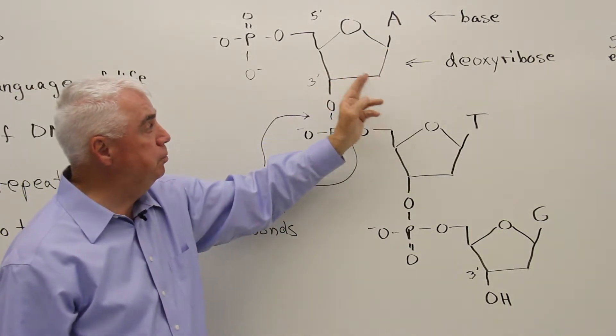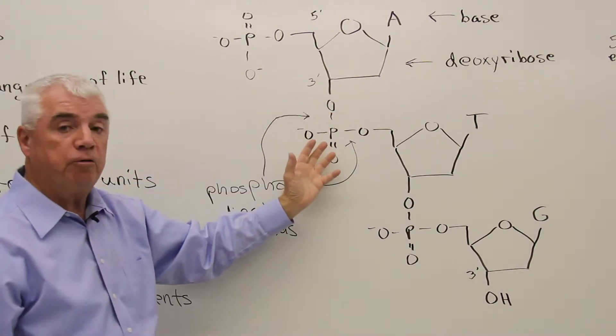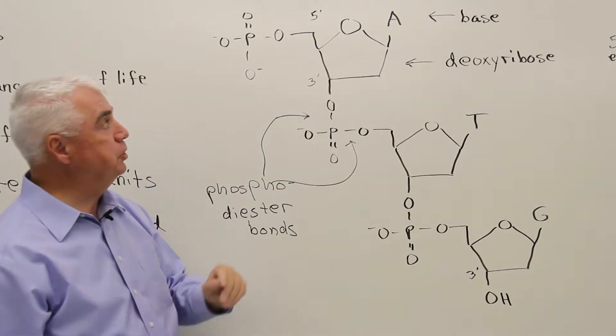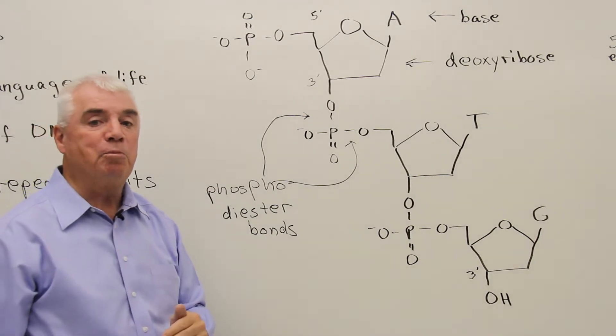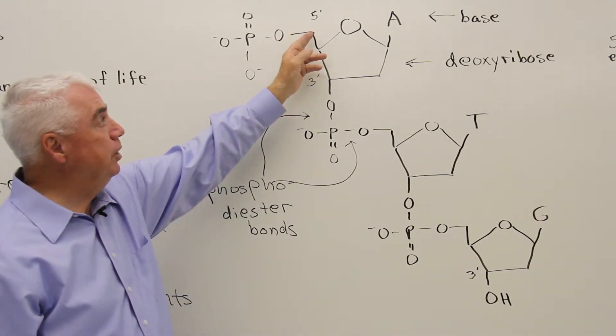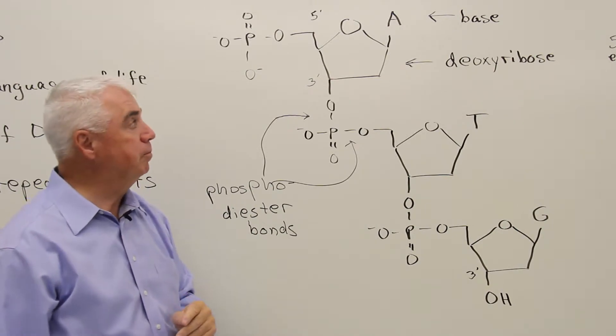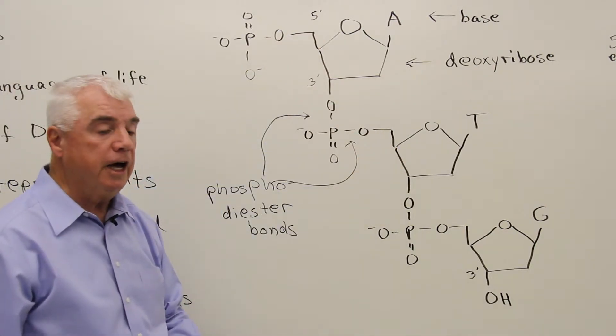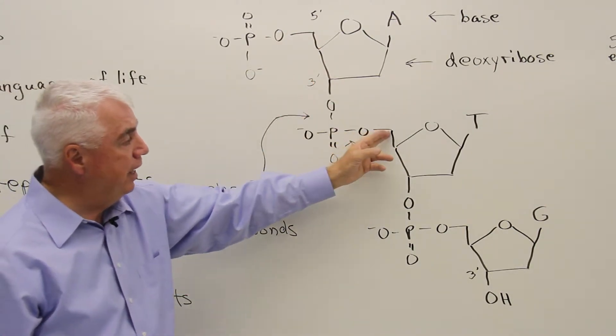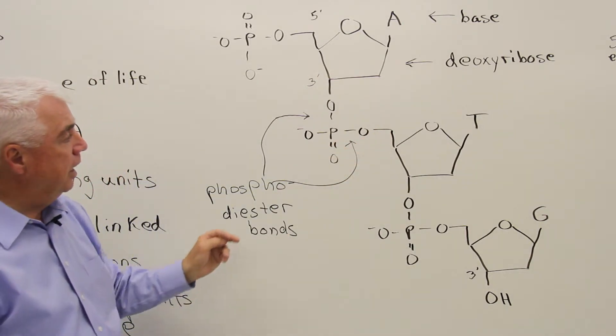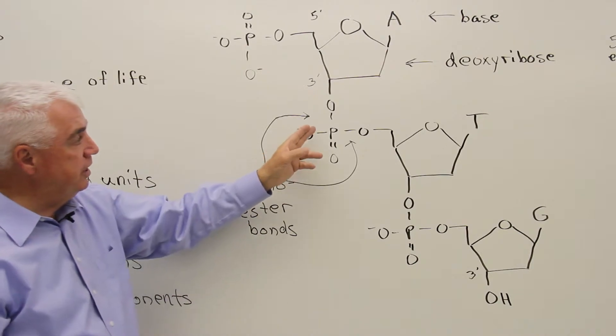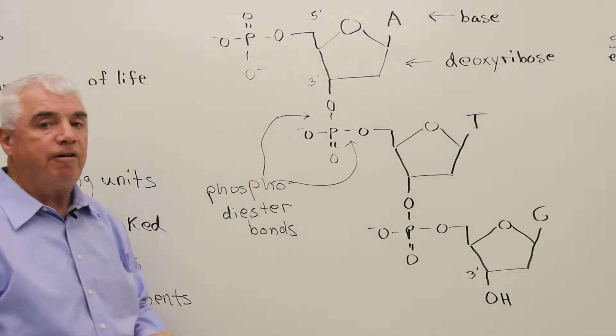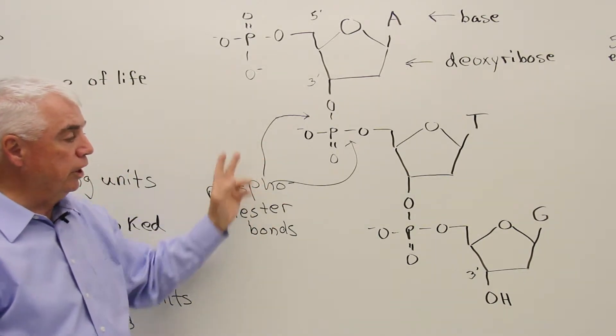Because of that we give these numbers in the ribose or deoxyribose ring the prime notation. So this would be the one prime, two prime. Here at three prime we have a phosphate group linking to the next nucleotide. Up here would be the five prime position. Here's a phosphate linking these two nucleotides together between the three prime and the five prime position. Phosphate has these ester linkages that are linking the two sugars together, and so we call those phosphodiester bonds or linkages.